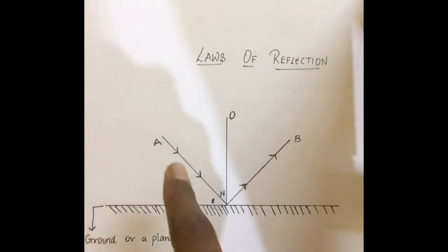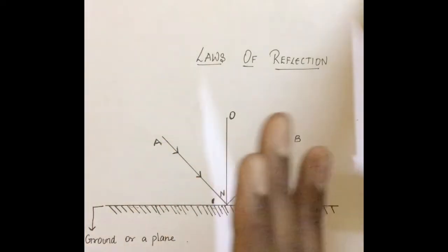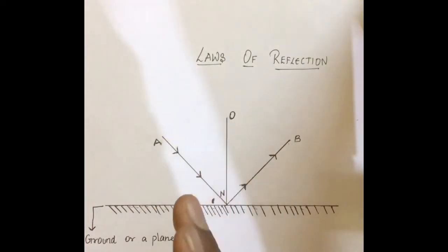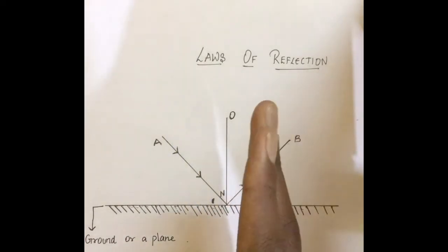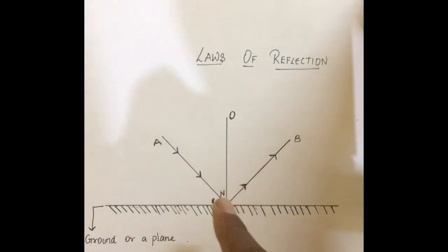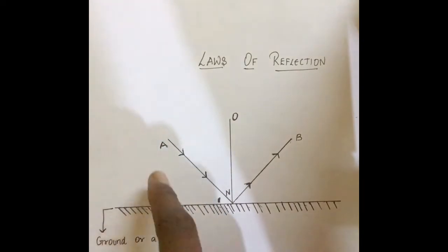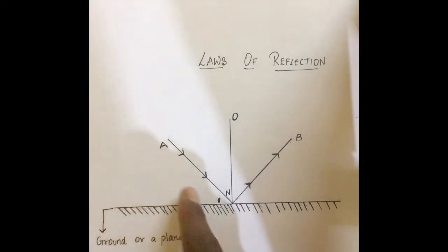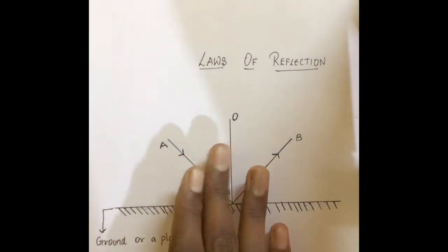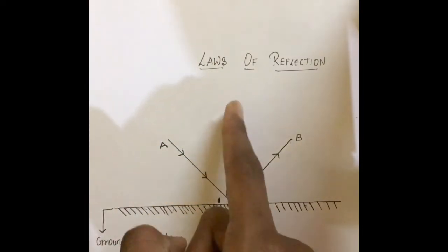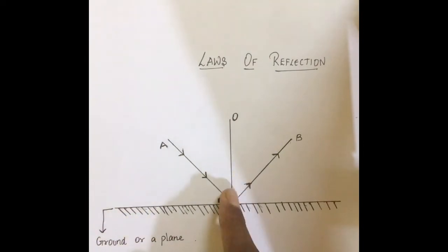In this diagram, AN is the incident ray. The next one to be explained is the reflected ray. The reflected ray is the bouncing of light from the surface or the ground. In this diagram, NB is the reflected ray. The point where the incident ray hits the ground or the plane is called the point of incidence. In this diagram, point N is the point of incidence.